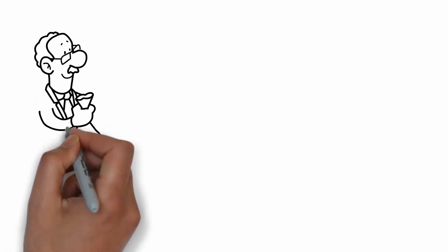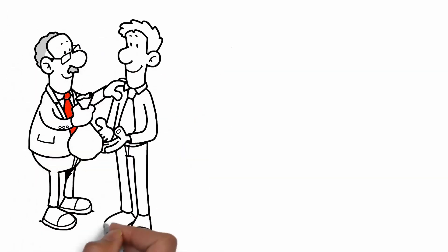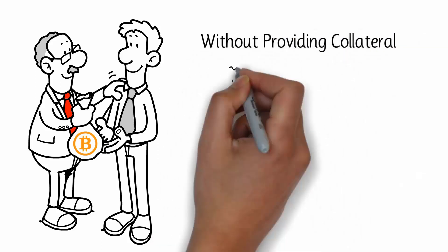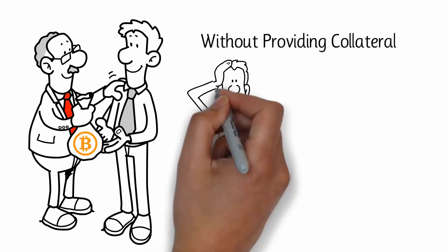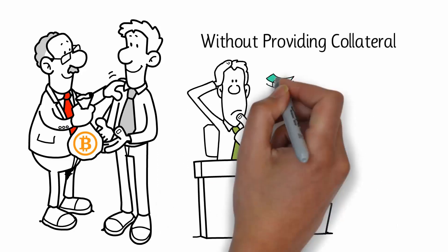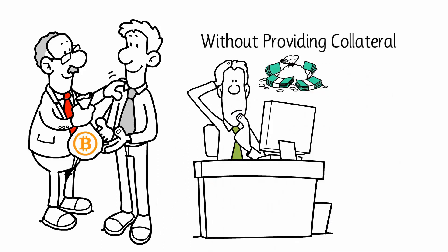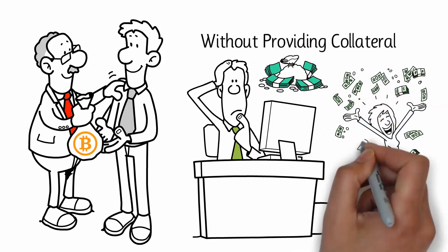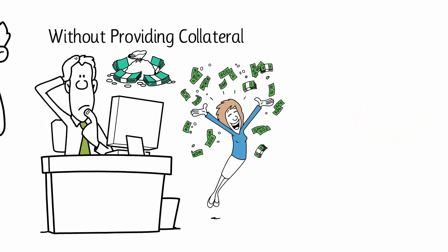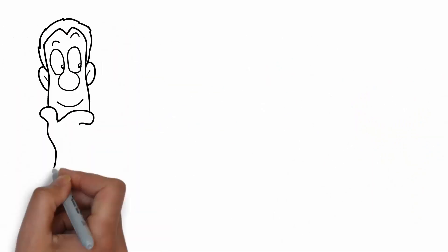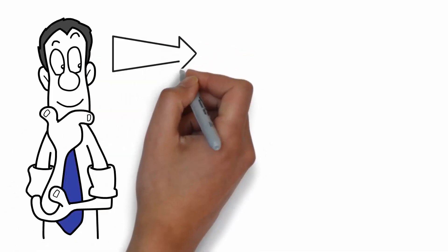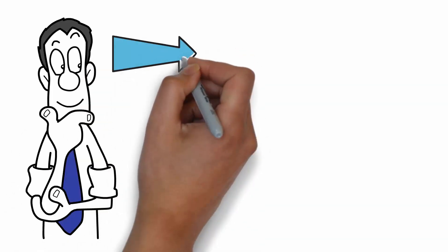A flash loan is a type of crypto loan that can be taken out without providing collateral in return. Users can request millions of dollars anonymously, and DeFi platforms will send their funds without asking any questions. Sounds weird, right? While the premise may sound attractive, there is an important catch that imposes a limitation upon flash loans.